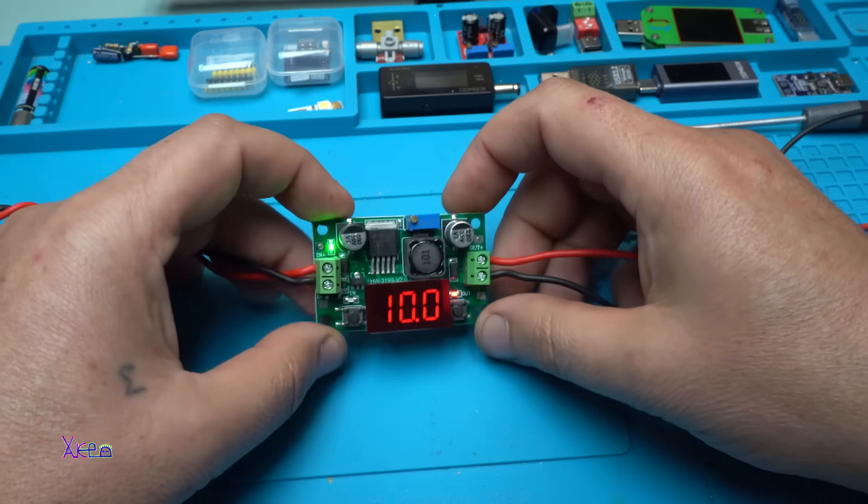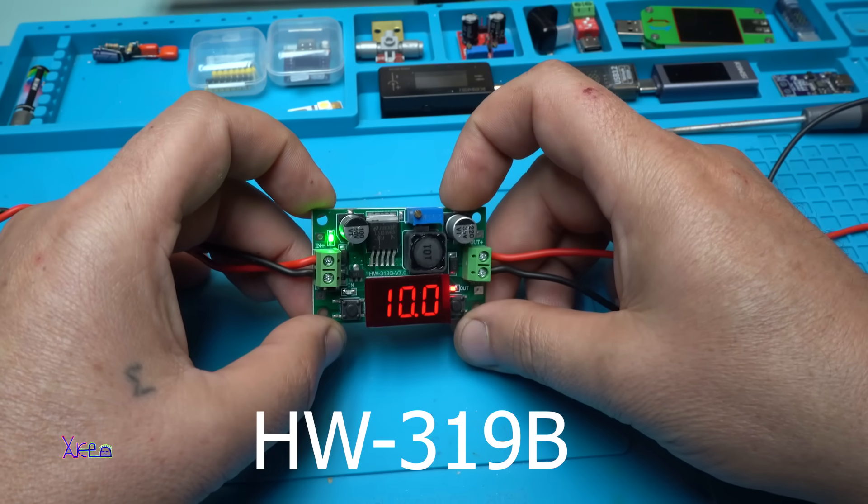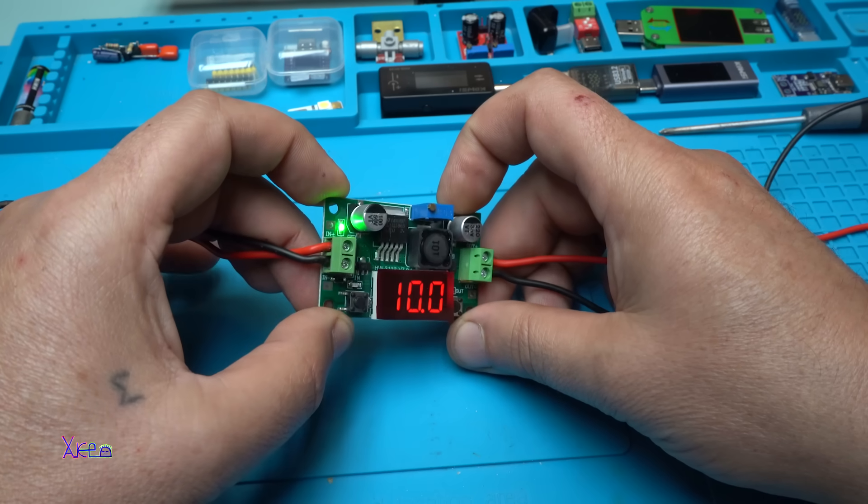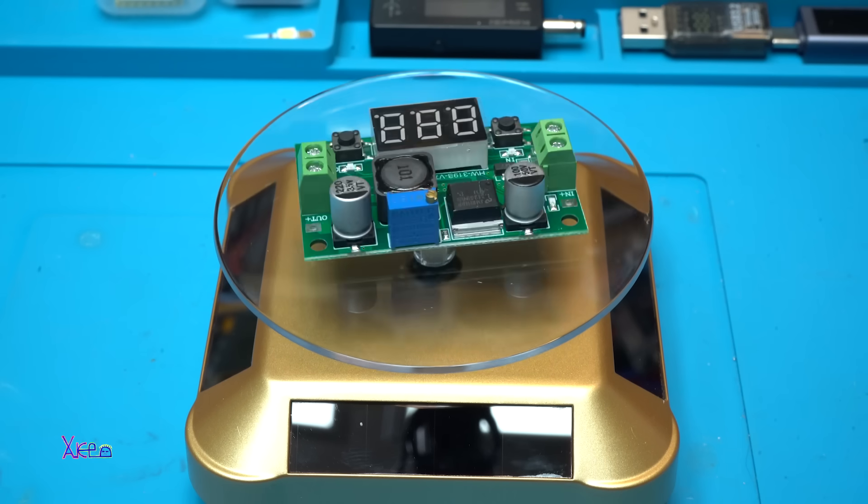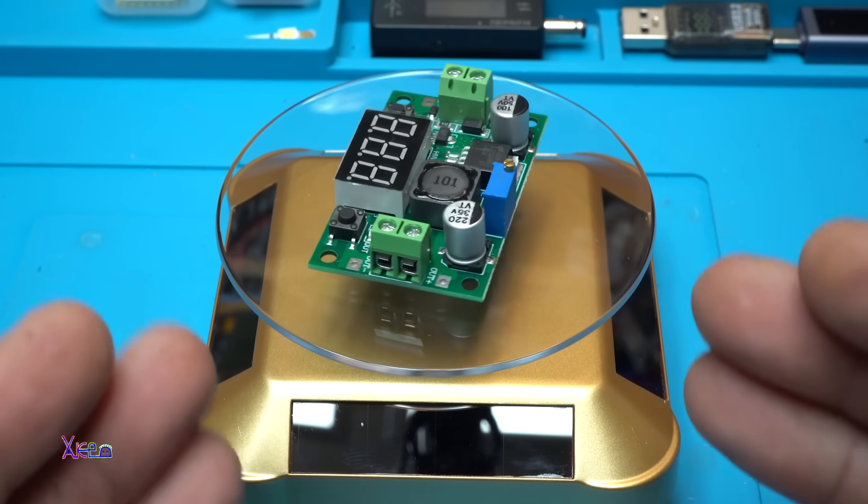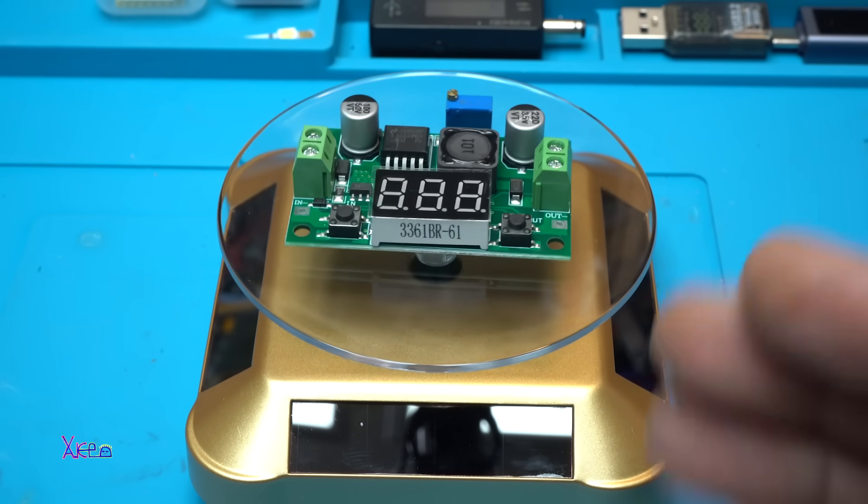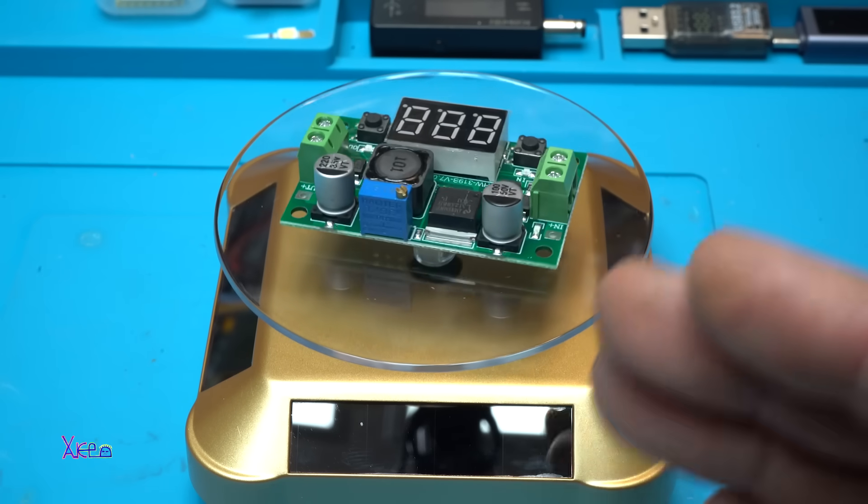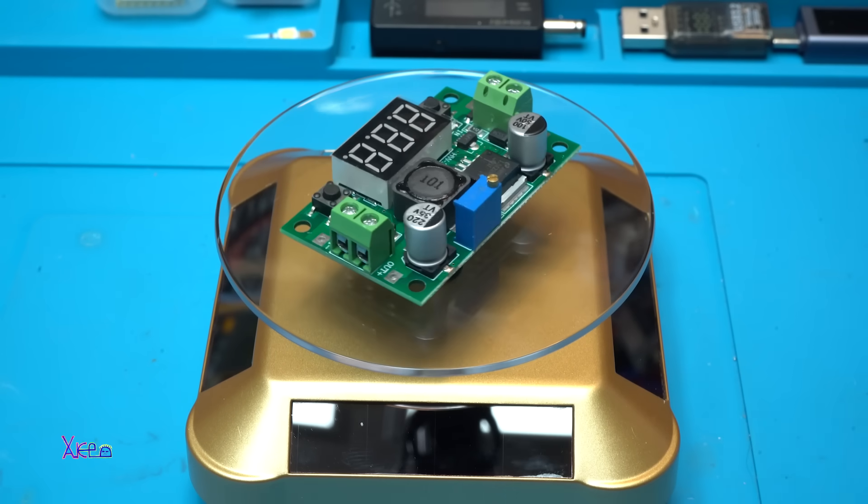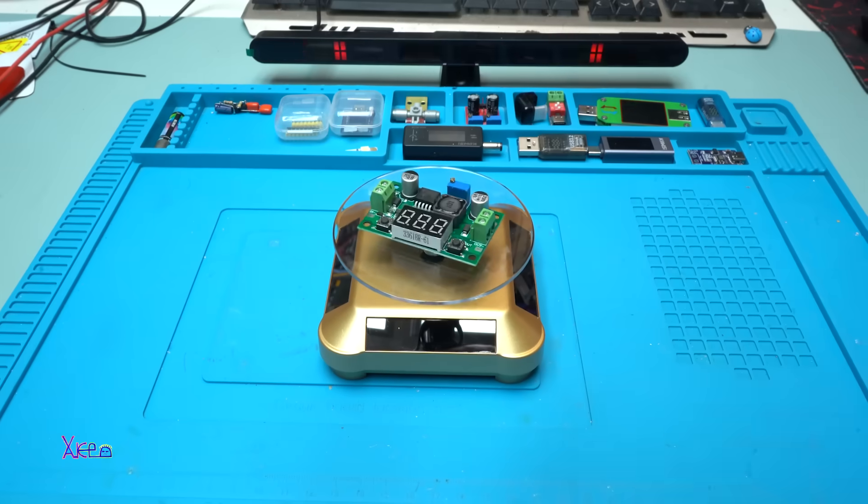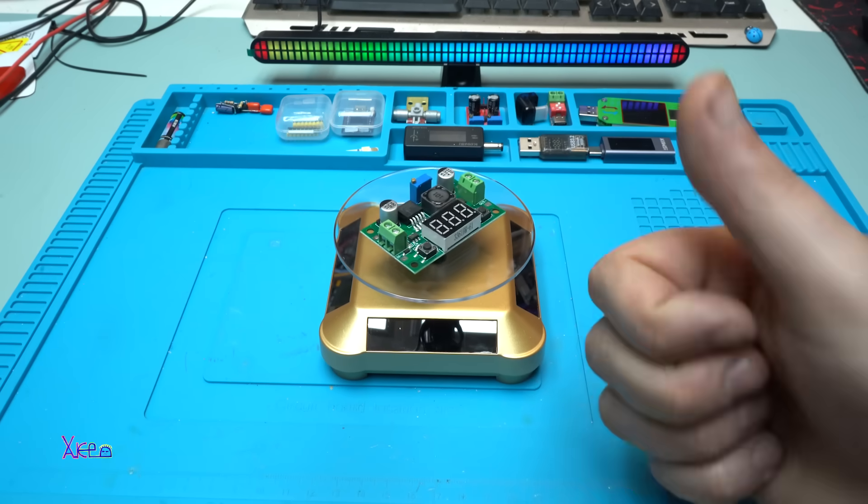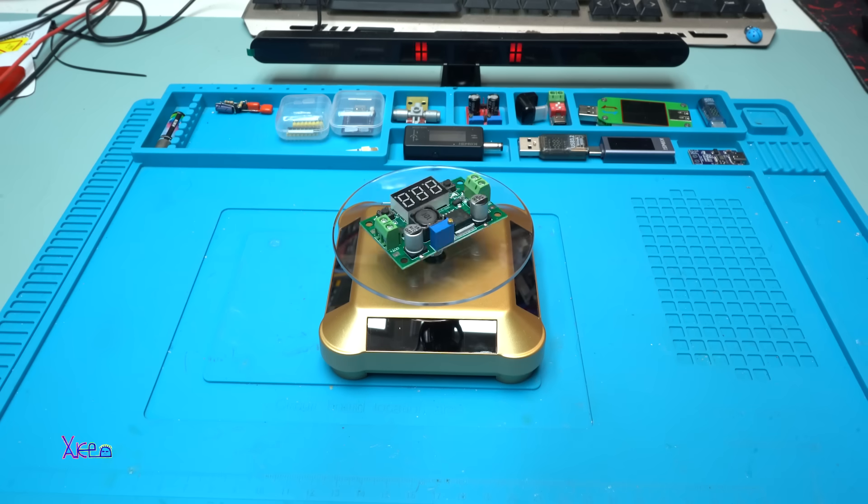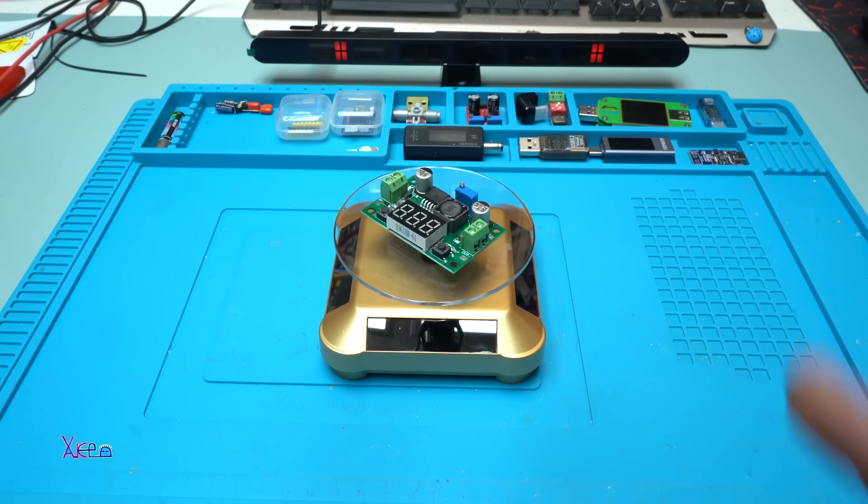If you want to search it online, the model is HW319B version 7, it says. Okay, I hope you liked today's video presentation of this DC to DC module that can handle 2 amperes and you can adjust the voltage from 1.2 volts to 30 volts. Okay, that was all for today's video. Please give a like, share, and subscribe to my channel. See ya! I love this gadget turntable solar thing.